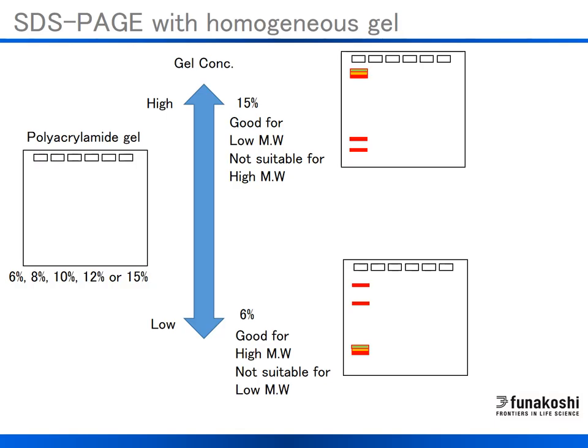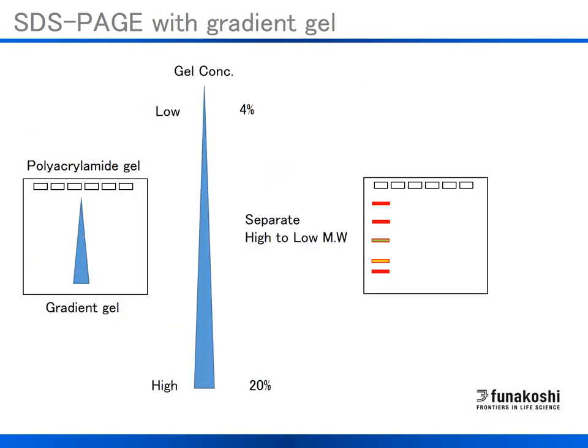This makes it difficult to separate a wide molecular weight range of proteins from one gel. Single percentage gels are not suitable for separating a wide range of protein sizes. To overcome this problem, gradient gels are useful. A gradient gel consists of low acrylamide percentage at the top of the gel and high acrylamide percentage at the bottom, allowing resolution of a wide molecular weight protein range.